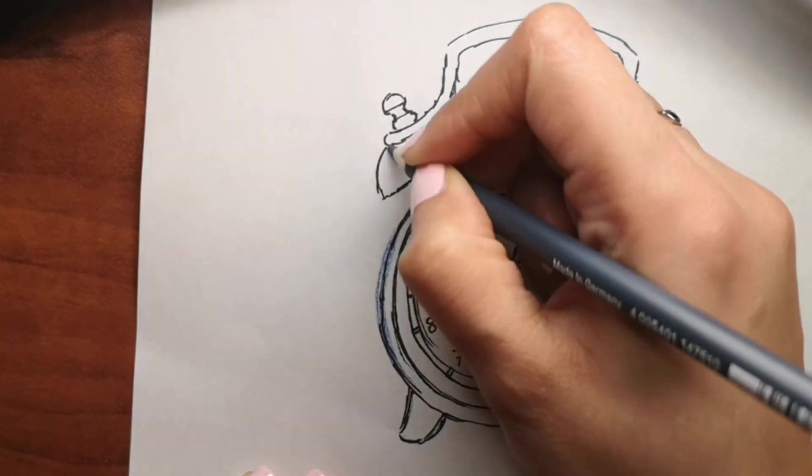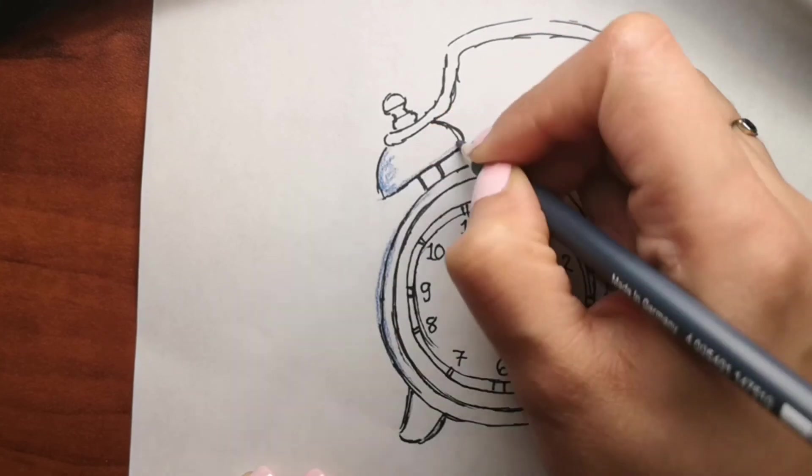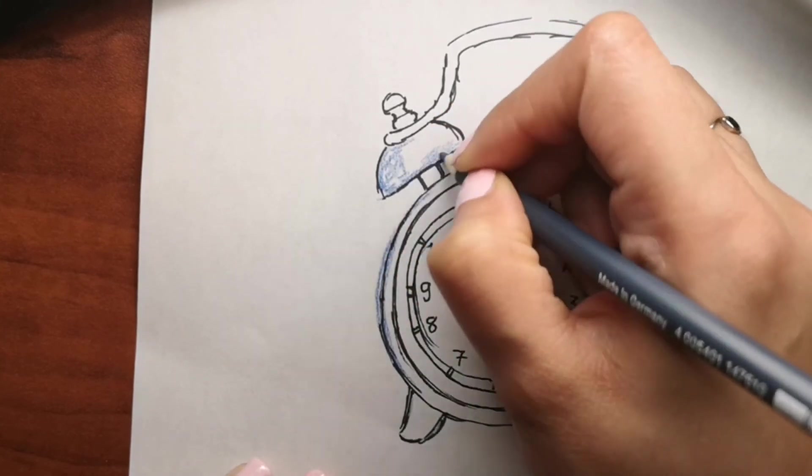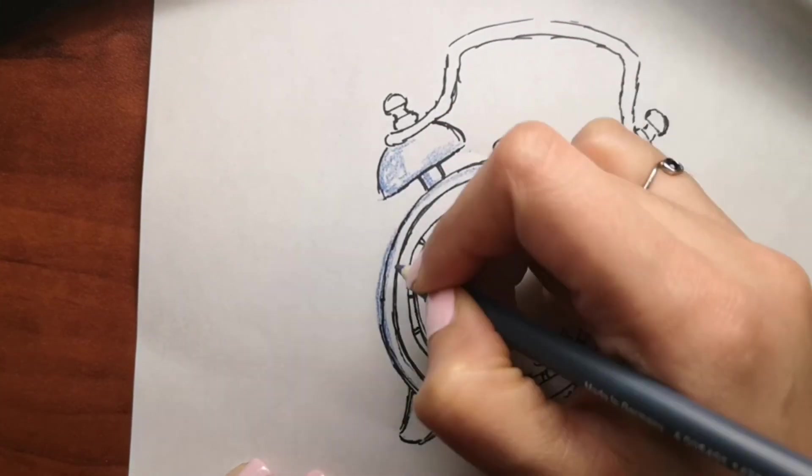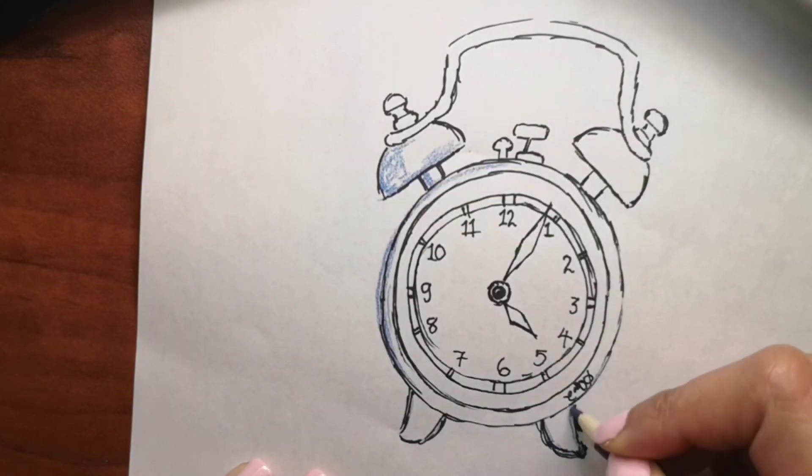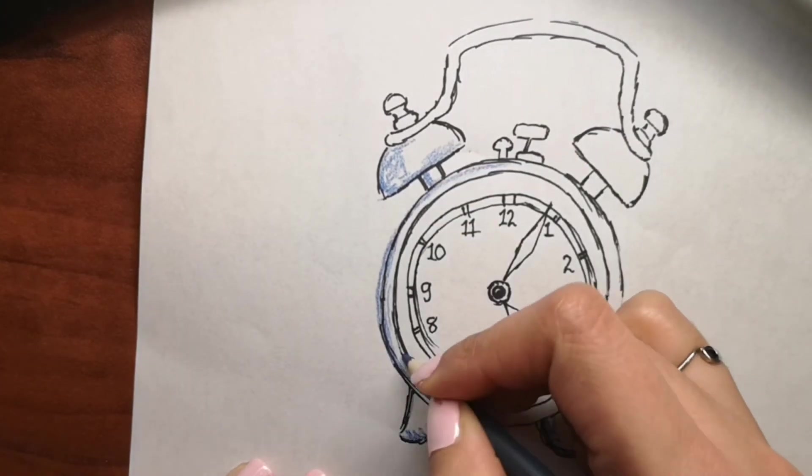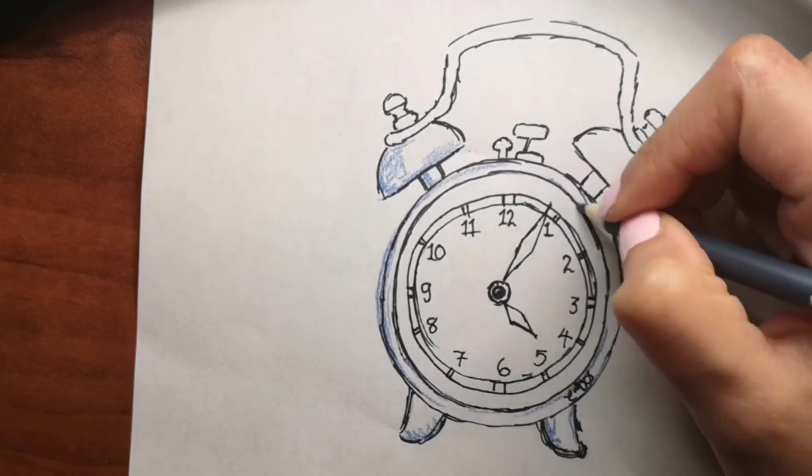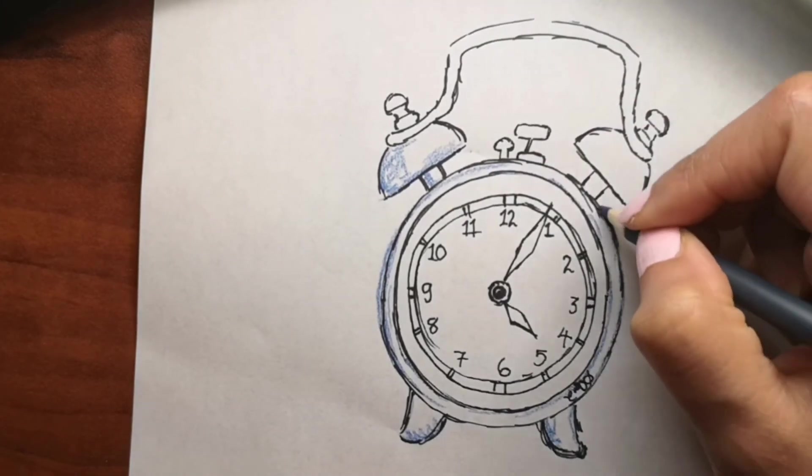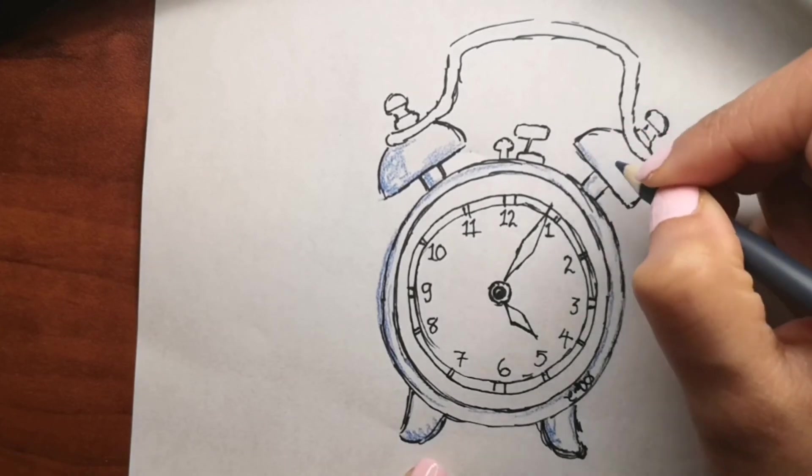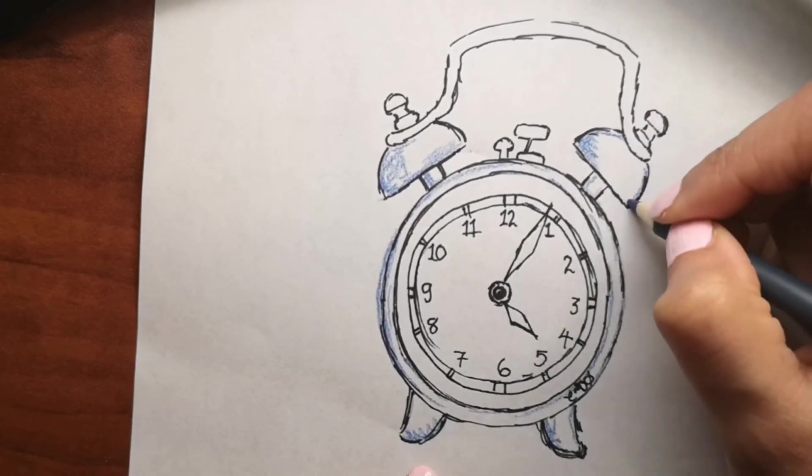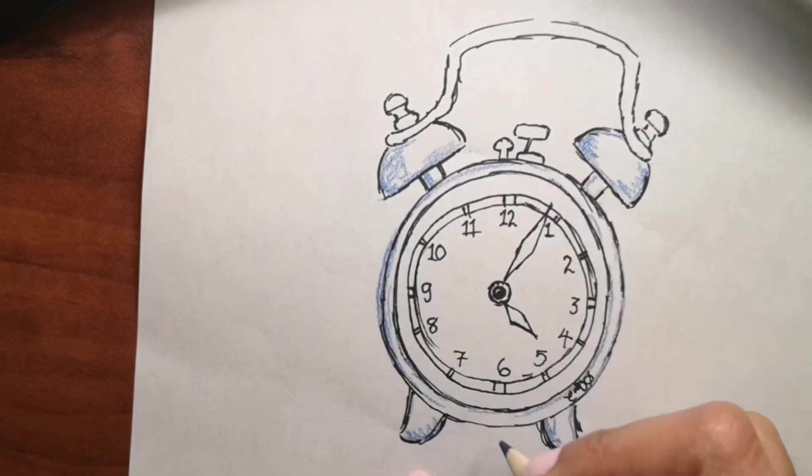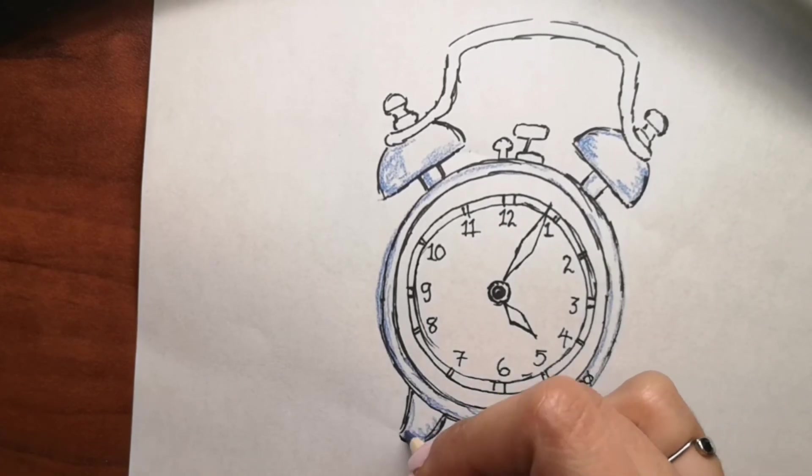It's up to you what colors you want to use. You can make it a blue clock like I'm doing here or any color that you like. Today I'm going to use my Faber-Castell color pencils. If you want good quality art supplies and color pencils, check the description box below for links. Those are Amazon links.